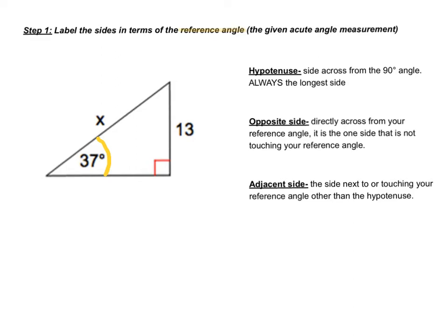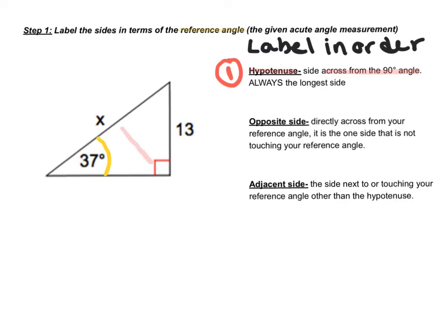Next, you are always going to label the sides in this order. The first side you are going to label is your hypotenuse, which is the side that is across from the 90-degree angle. So if I look across from the 90-degree angle, I get this side x, which I am going to label as the hypotenuse.